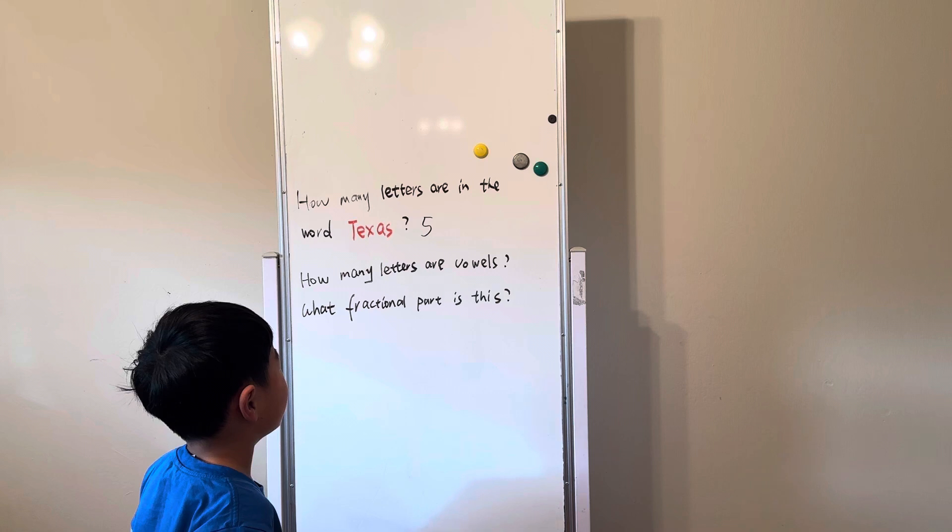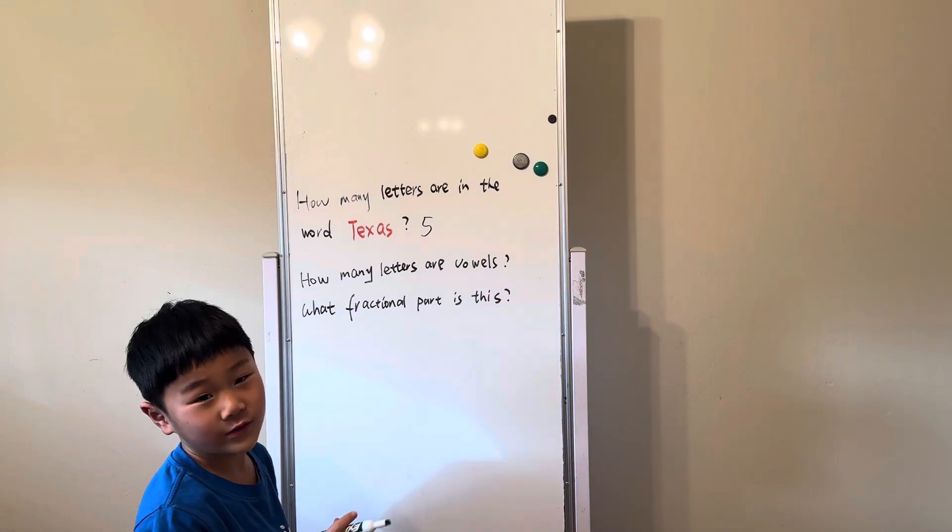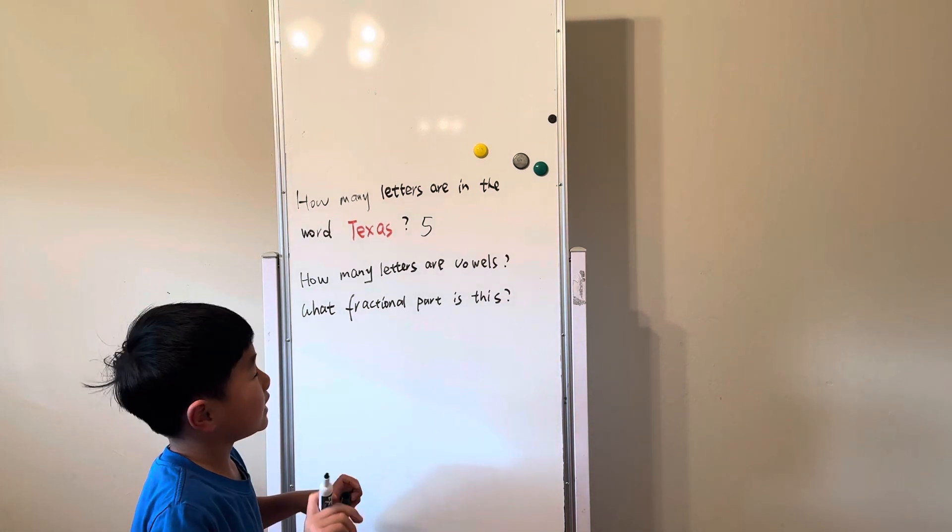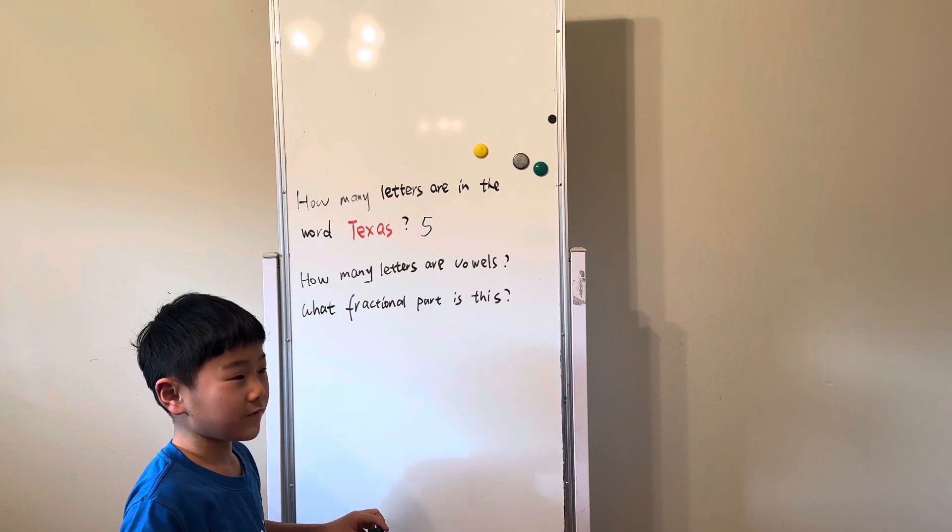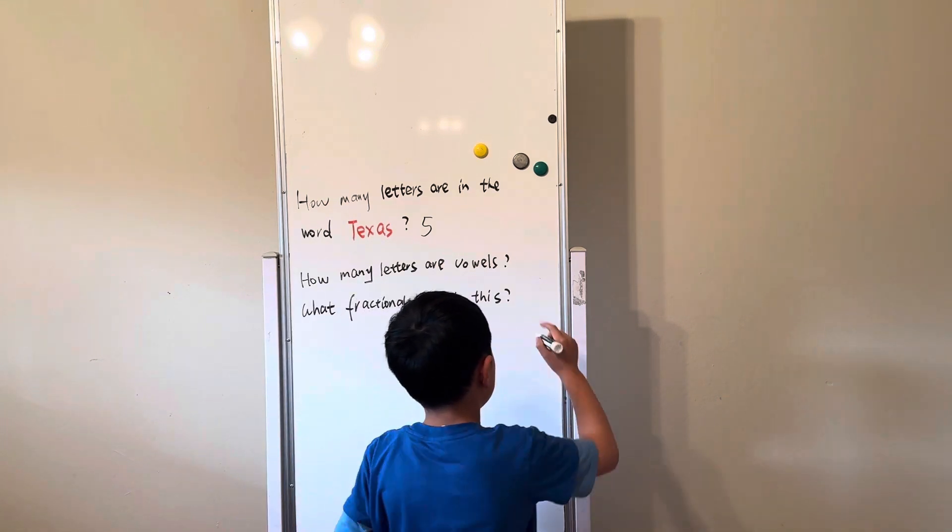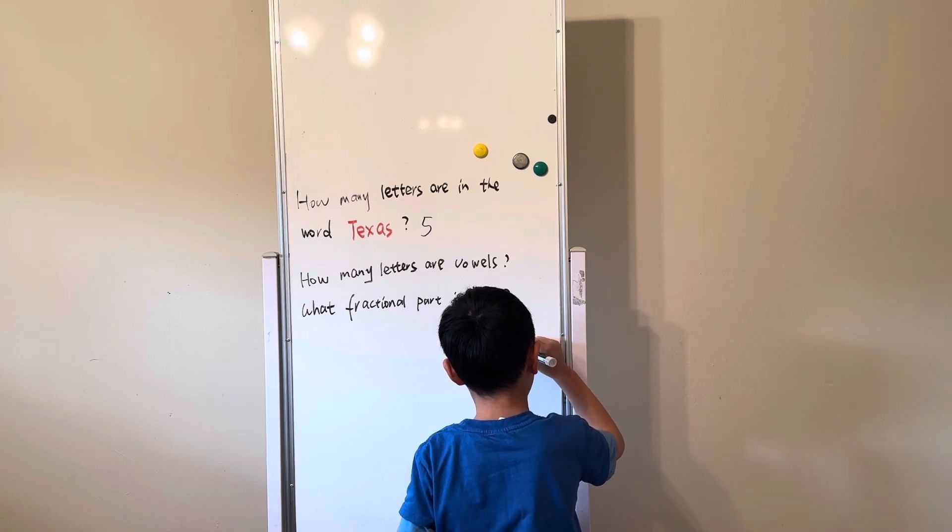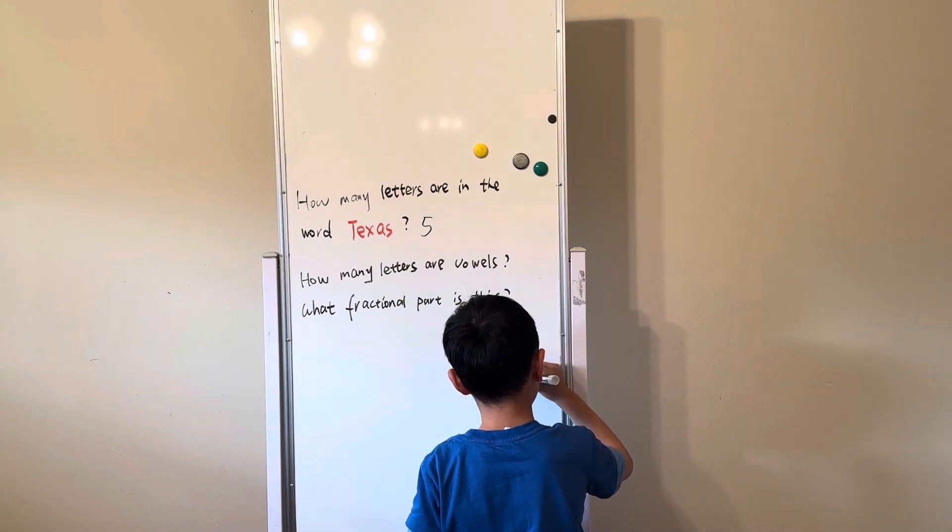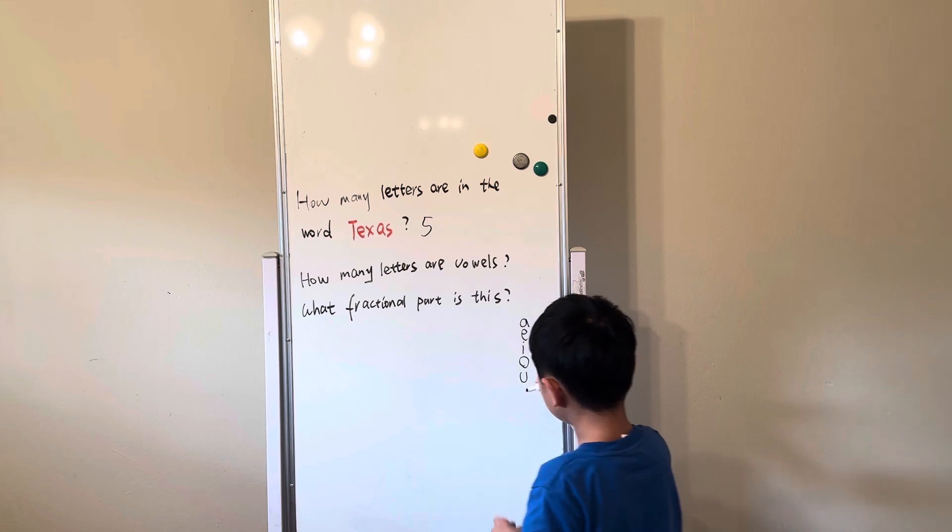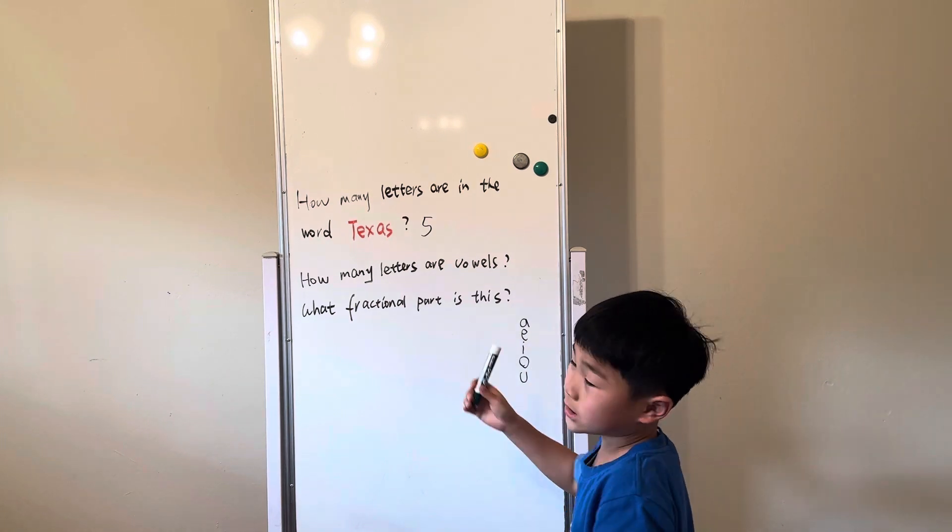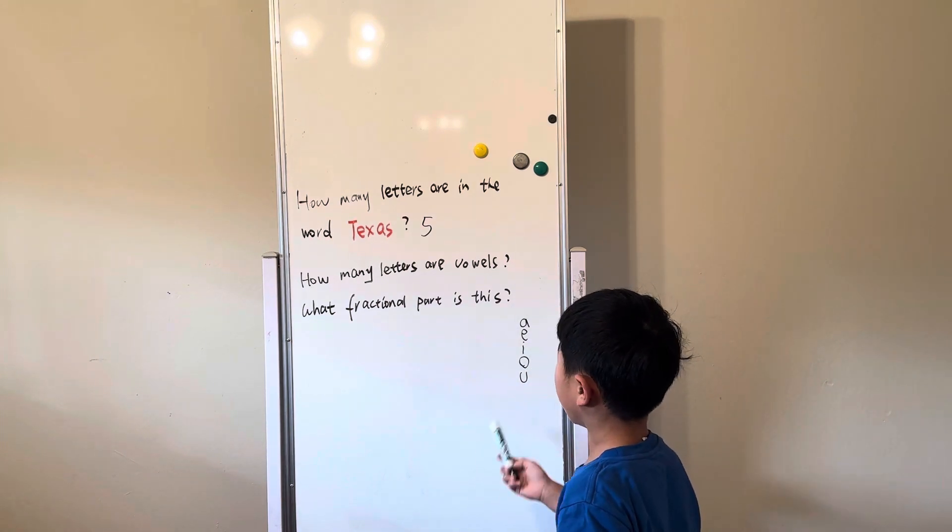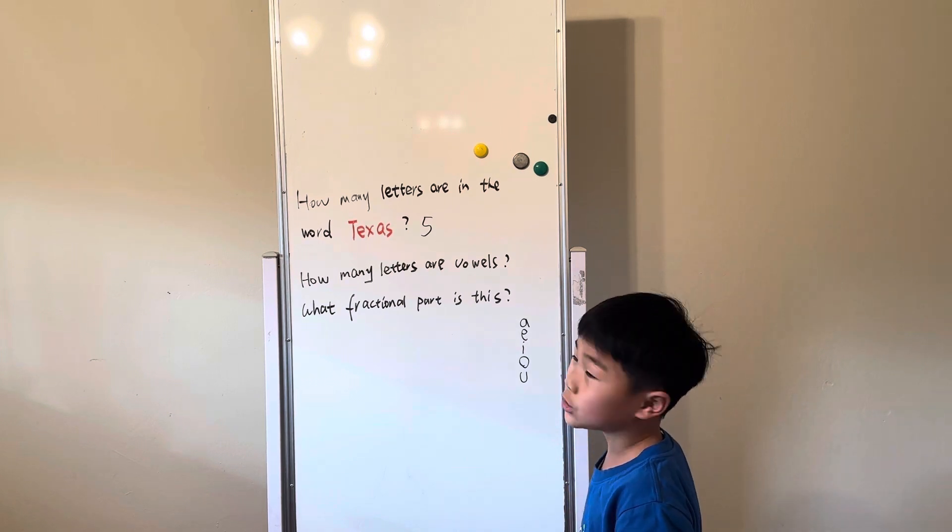How many letters are vowels? So we need to figure out which letters are vowels. Of course, there's a few vowels: A, E, I, O, U. So how many letters do you see are vowels? Two, right?